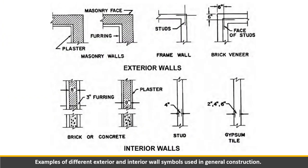These are examples of different exterior and interior walls used in general construction. Walls are not only represented by a simple line — there are now advanced construction methods with many different types of wall materials. First is masonry wall — that is hollow blocks or full concrete. There is also frame wall, brick, brick veneer, brick or concrete, stud, and gypsum tile. Depending on the specification of the wall construction, these are the types of wall symbols that will be used.